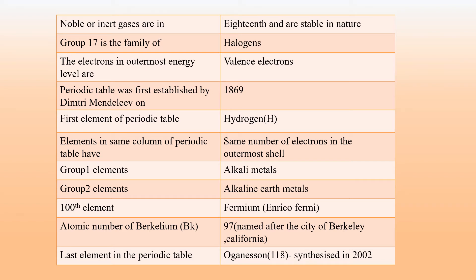Elements in the same column of the Periodic Table have the same number of electrons in the outermost shells. Group 1 elements are known as alkali metals. Alkali metals are metals that, when reacted with water, form hydroxide — for example, sodium hydroxide.